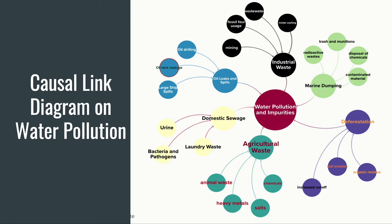Based on the information that I've collected, I've created a causal link diagram on water pollution. On the right, you can see that I've written industrial waste, marine dumping, and deforestation, but I've already talked about those in the beginning of the video, so I'm going to focus on oil leaks and spills, domestic sewage, and aquaculture waste, and their sub-factors.